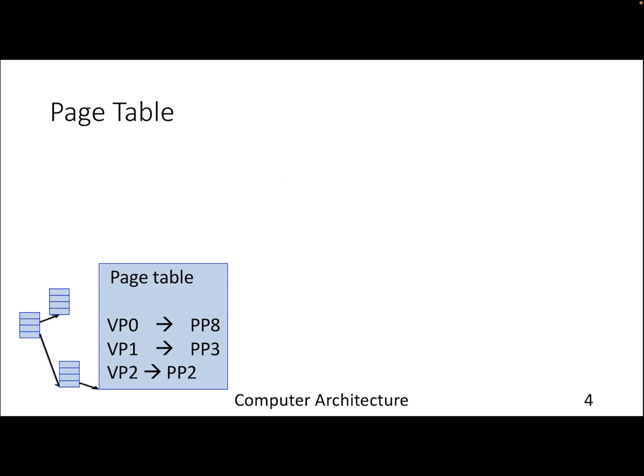The OS is actually the boss who maintains the mapping from a virtual address to a physical address in the form of a page. The page size is typically in KBs, and in modern servers it can go up to MBs and GBs. A page is nothing but a contiguous chunk of addresses — a unit of translation used by the OS. Similar to other data structures, it is stored in primary memory. Whenever we get a load from the processor, we have to go through this page table to get the corresponding physical page and then retrieve the data present in that physical page.